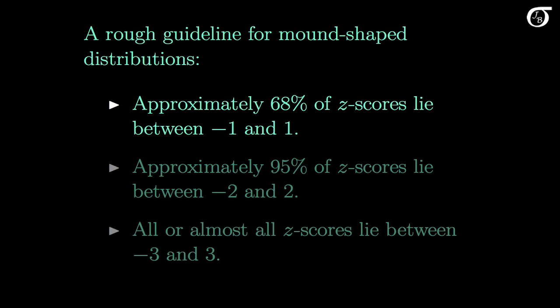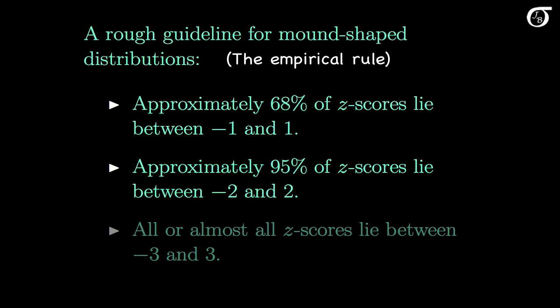Here's a rough guideline for mound-shaped distributions, often referred to as the empirical rule. It's based on the normal distribution, which we'll talk more about later, but for now we'll consider it a rough guideline. Approximately 68% of z-scores lie between minus 1 and 1 — in other words, approximately 68% of observations will lie within one standard deviation of the mean. Approximately 95% of z-scores lie between minus 2 and 2, meaning approximately 95% of observations lie within two standard deviations of the mean. And all or almost all z-scores lie between minus 3 and 3, meaning all or almost all observations lie within three standard deviations of the mean.